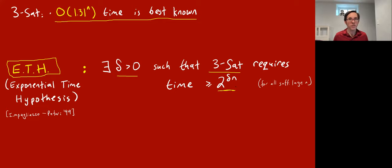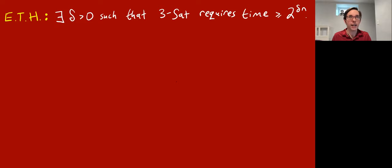This is like a direct strengthening of P ≠ NP. P ≠ NP is equivalent to saying that 3-SAT cannot be solved by any polynomial time algorithm. ETH is saying 3-SAT cannot even be solved by any 2^(o(n)) time algorithm. What's cool about it is you're making a stronger assumption than P ≠ NP, but if you make it, you can derive some stronger conclusions that we don't know how to conclude merely assuming P ≠ NP.